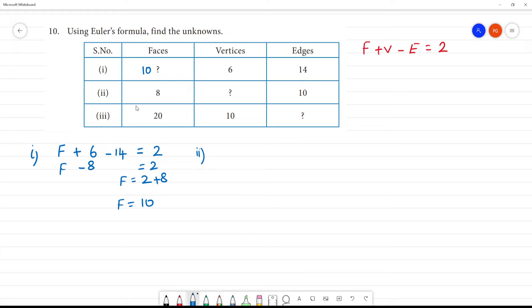Next, second one. Second one, faces is 8 plus vertices minus edges is equal to 10, that is equal to the formula which is 2. Now, 8 minus 10 is equal to minus 2, that is equal to 2. So V minus 2 is equal to 2.